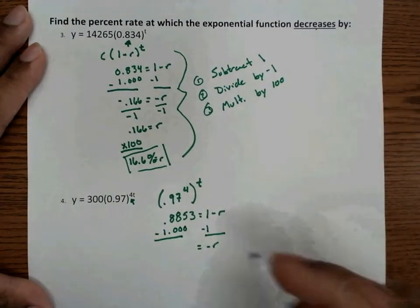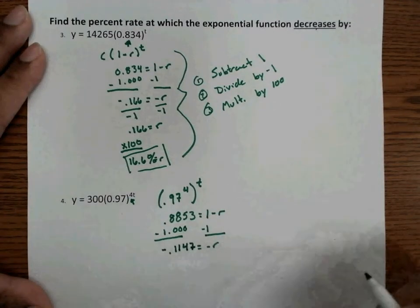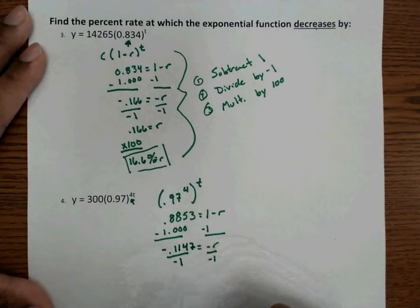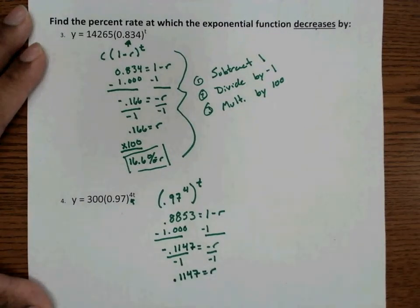Remember, it's negative. So we get negative 0.1147. The r is negative, so we divide by negative 1. And we get a positive 0.1147 is equal to r.